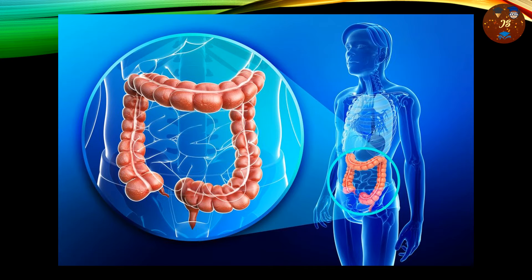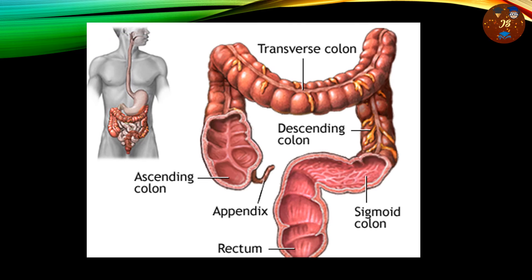This is the position of the large intestine — you may have seen this picture in the large intestine lesson as well. These are the colons: this is the ascending one, this is the transverse one, this is the descending one, and this is the sigmoid one. So four parts: ascending colon, transverse colon, descending colon, and sigmoid colon.